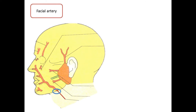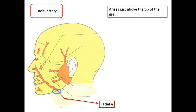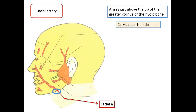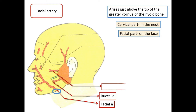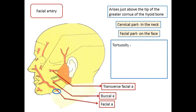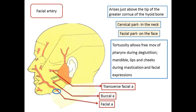The facial artery arises from the external carotid just above the tip of the greater cornu of the hyoid bone. It runs upwards, first in the neck as the cervical part and then on the face as the facial part. The course of the artery in both places is tortuous. The tortuosity in the neck allows free movements of the pharynx during deglutition; on the face it allows free movements of the mandible, the lips, and the cheek during mastication and facial expressions.